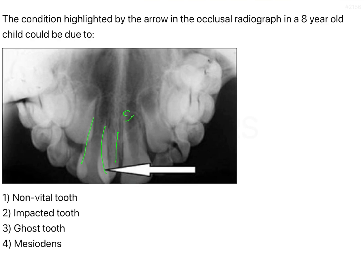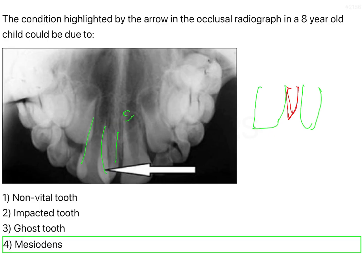There is no complete development of the root — there is no apical closure. You have the two central incisors, and in between them, you have another tooth-like structure which is radiopaque. It is occupying the place right in the center of the entire maxillary arch. Such a characteristic appearance is going to always indicate towards only one type of anomaly, and that is what is called the mesiodense.